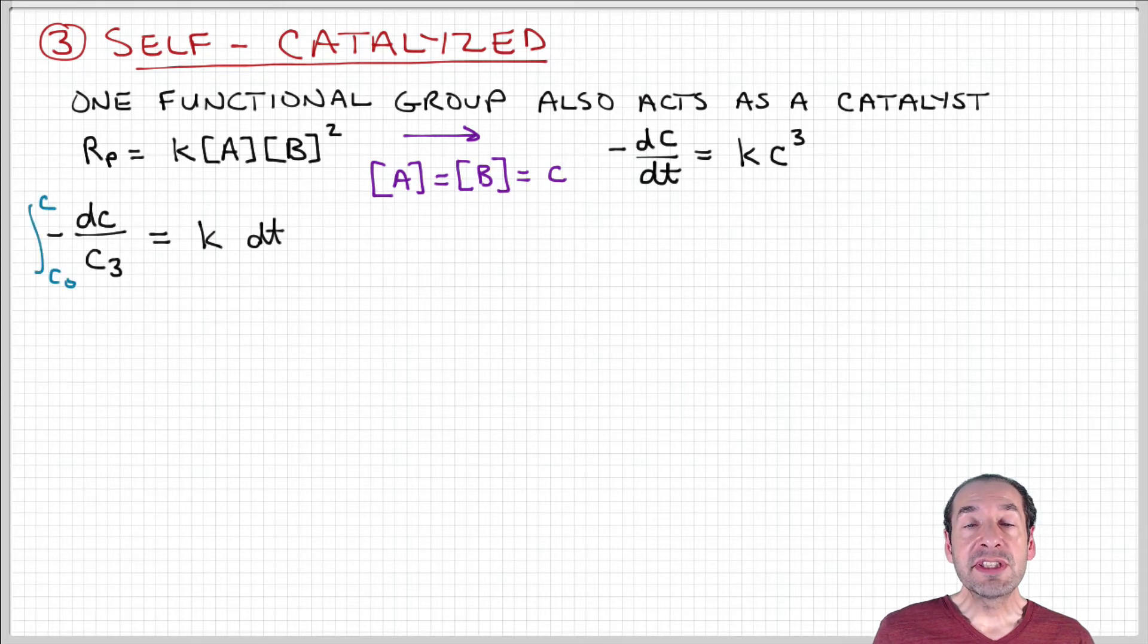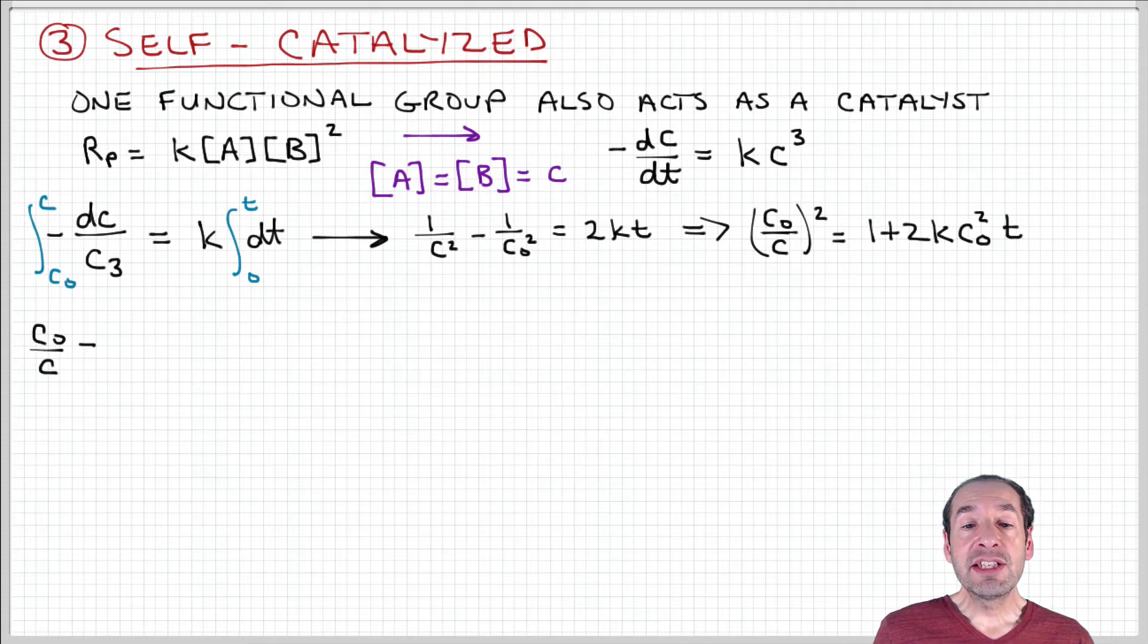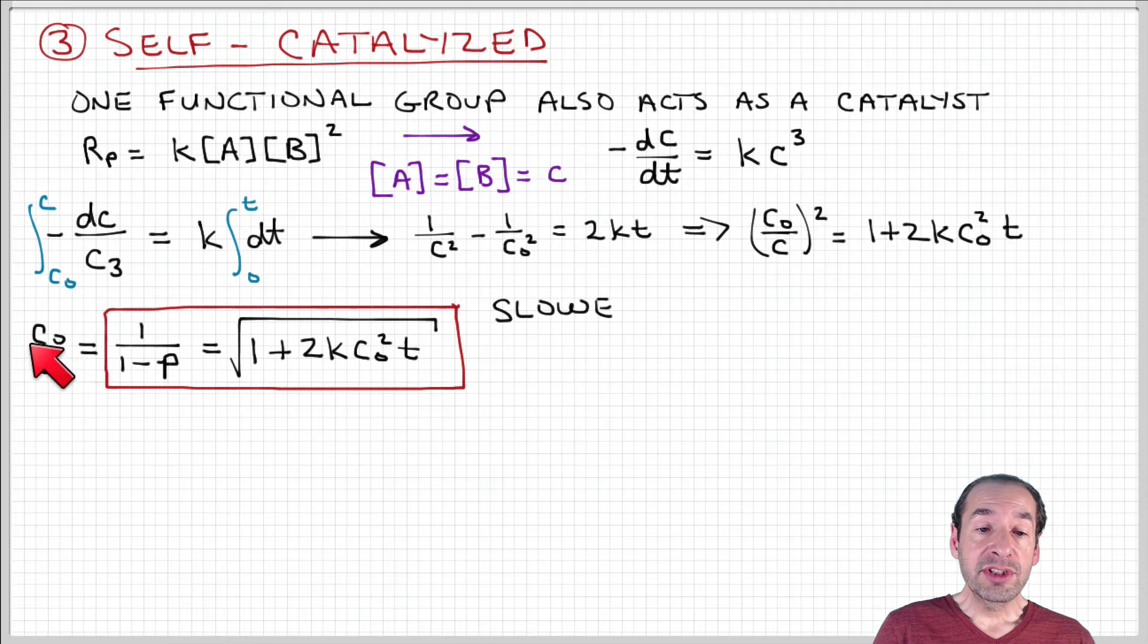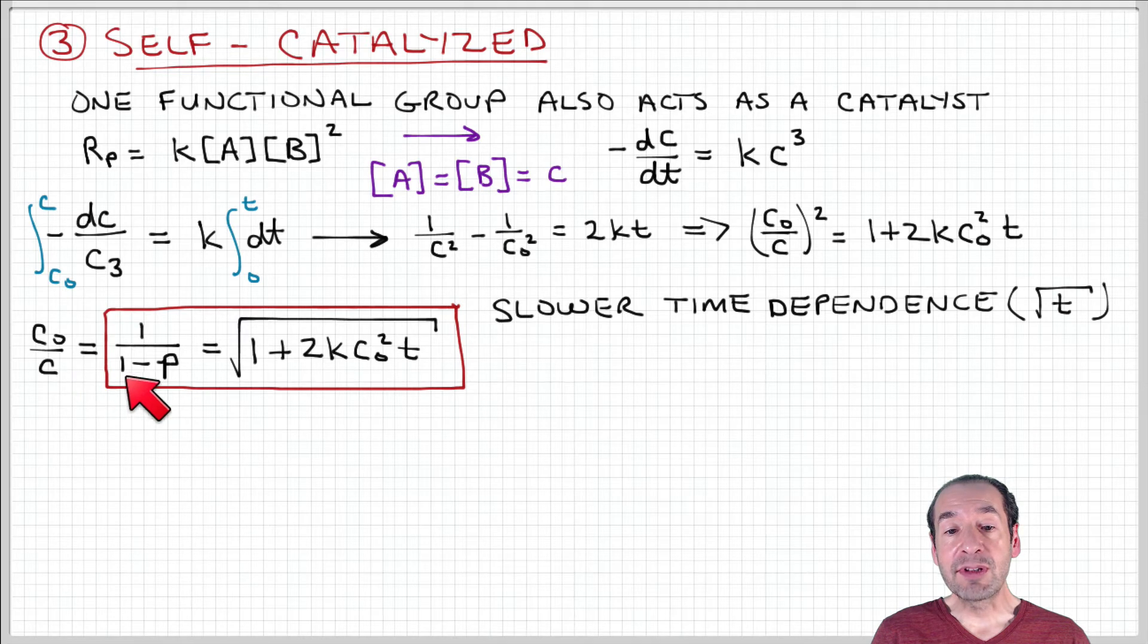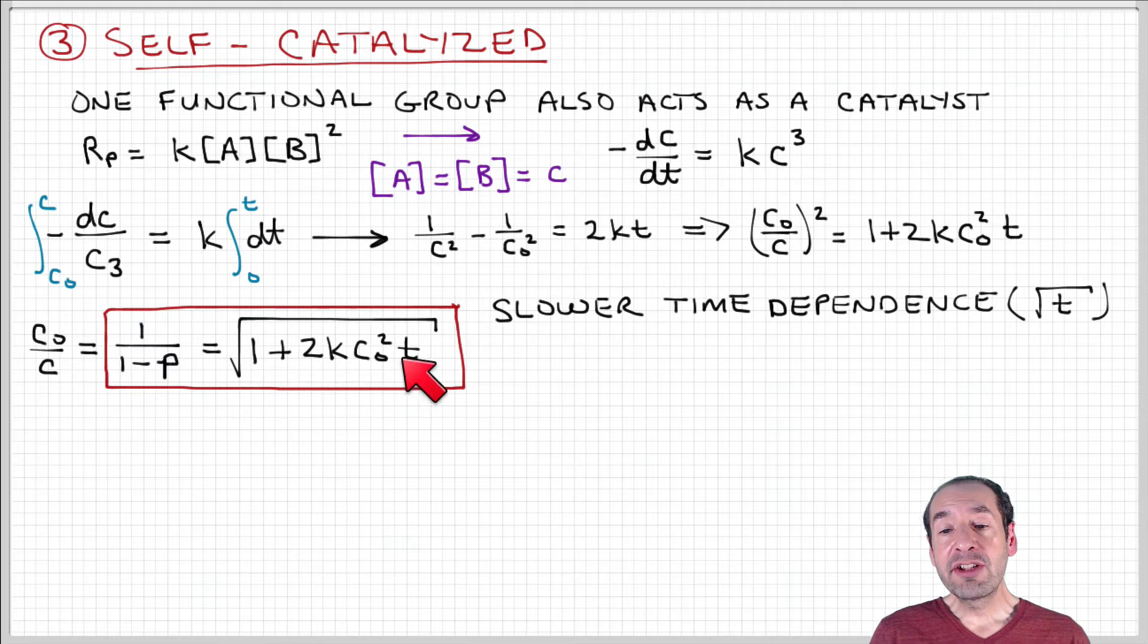We can again solve this in the same way that we did for the previous cases, and we just find that our relationship is a little bit different. So our concentration, one over the concentration of the monomers in the sample, which again is equal to one over one minus the extent of reaction, scales with the square root of time